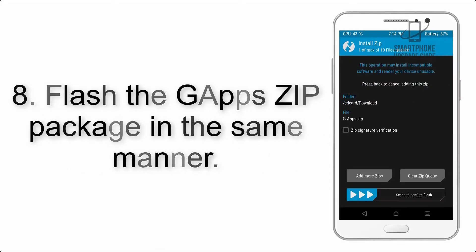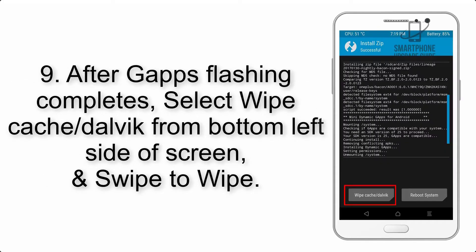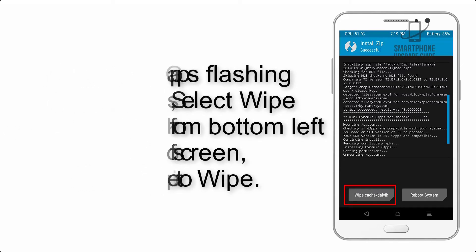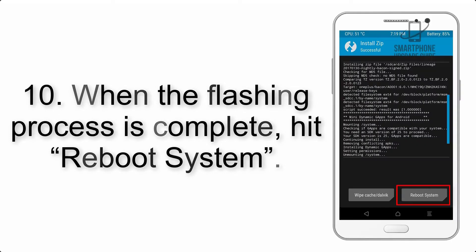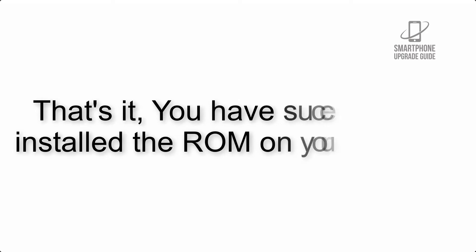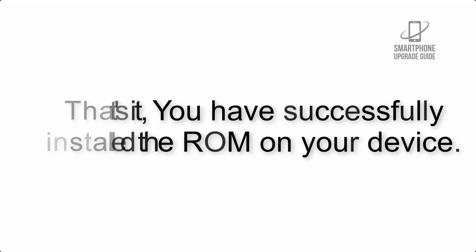Step 8: Flash the GApps zip package in the same manner. Step 9: After GApps flashing completes, select Wipe Cache and Dalvik from the bottom left side of the screen and swipe to wipe. Step 10: When the flashing process is complete, hit Reboot System. That's it — you have successfully installed the ROM on your device.